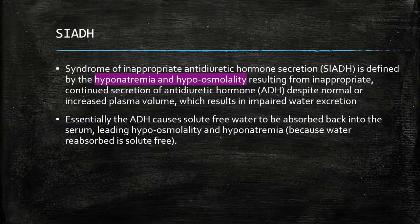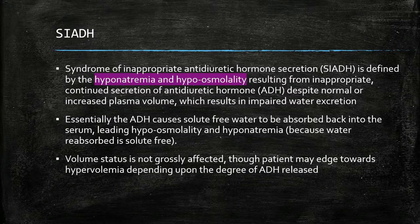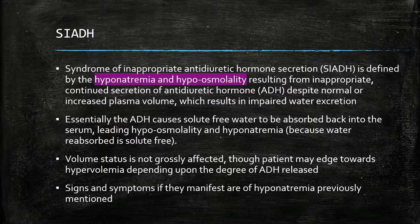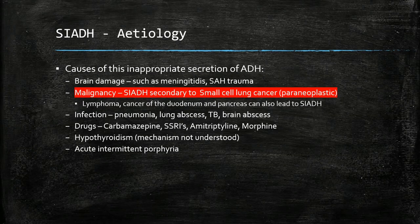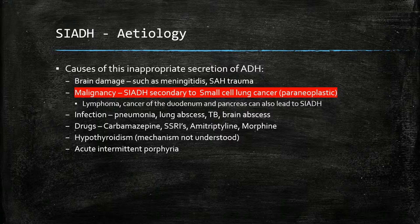Causes of SIADH include brain damage such as meningitis, subarachnoid hemorrhage, and malignancy — notably small cell lung cancer, lymphoma, and cancer of the duodenum. Pancreatitis can also lead to this. Other causes include infection and drugs such as carbamazepine, selective serotonin reuptake inhibitors, amitriptyline, and morphine. Hypothyroidism and acute intermittent porphyria can also cause this condition.